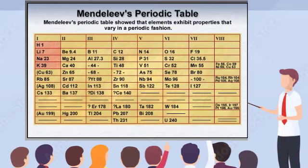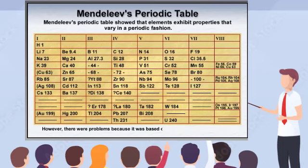Although Mendeleev's periodic table correctly showed that elements exhibit properties that vary in a periodic fashion, he was incorrect on a number of points. First, he was wrong about the elements that he believed had their atomic mass measured incorrectly — the numbers had been correct. Second, his periodic table was based on atomic mass. Today, we know that the atomic number, the number of protons in the nucleus, is a better approach to arranging the elements. This is the reason elements in Mendeleev's periodic table could not be arranged by sequentially increasing atomic mass.